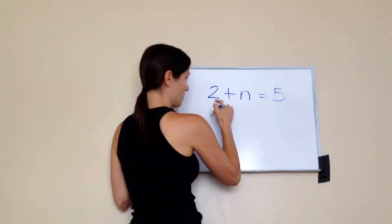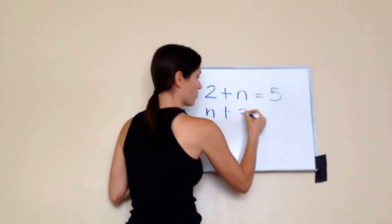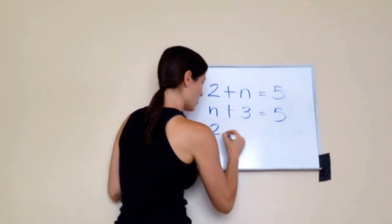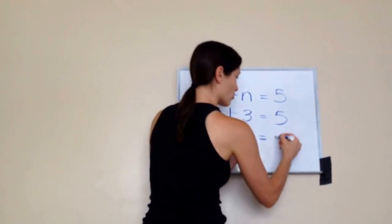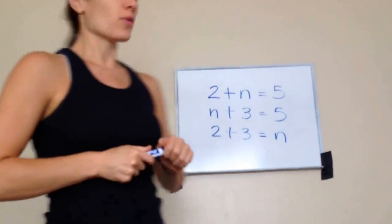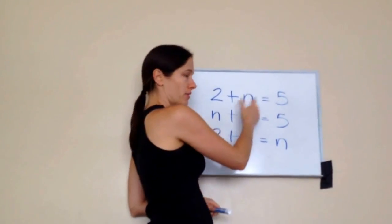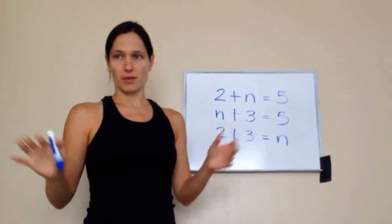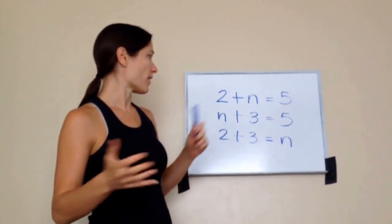You'll see it like: 2 plus N equals 5, or N plus 3 equals 5. Or you'll have both add-ins equals N. N just stands for 'what number are we missing.' You can put any letter in there — a lot of people do. Some people like W because it means 'what.'